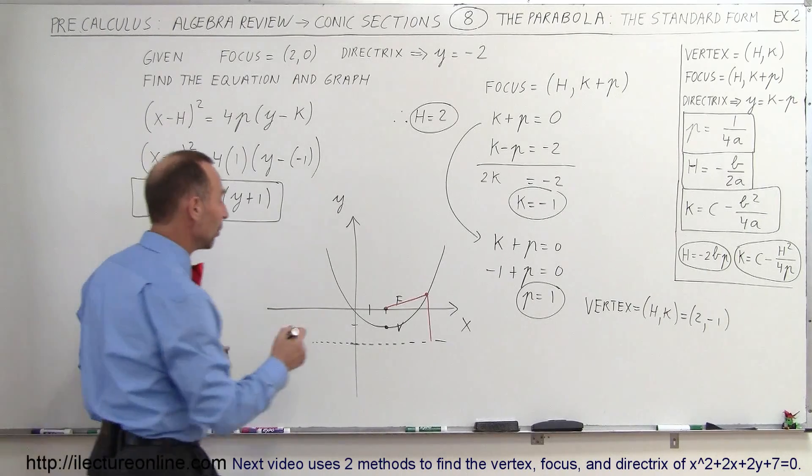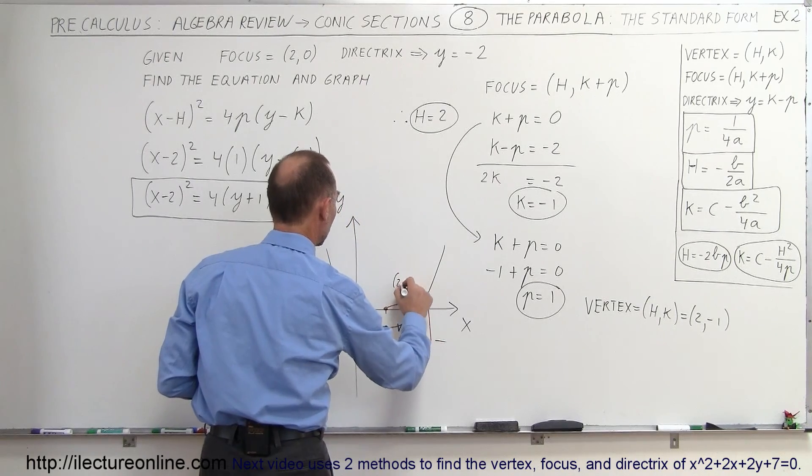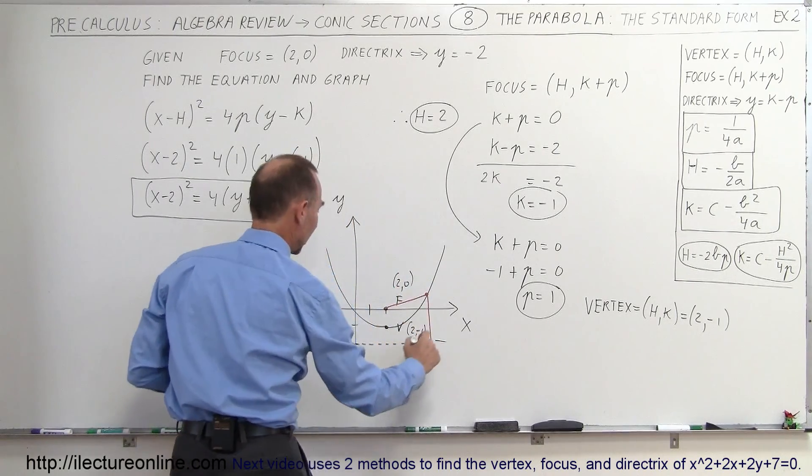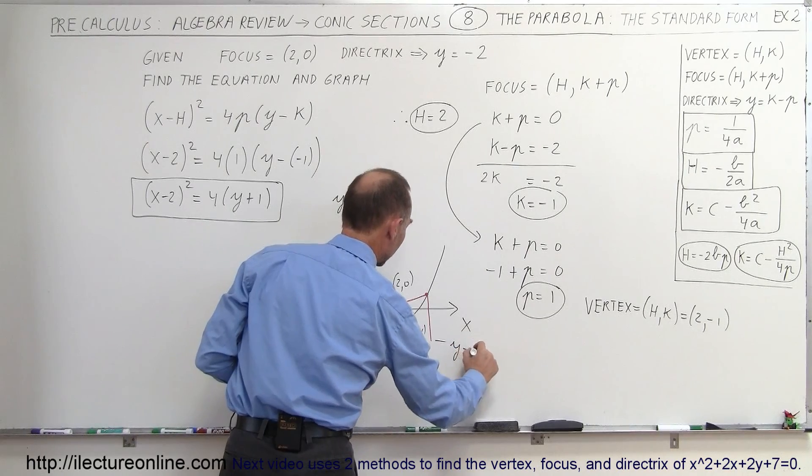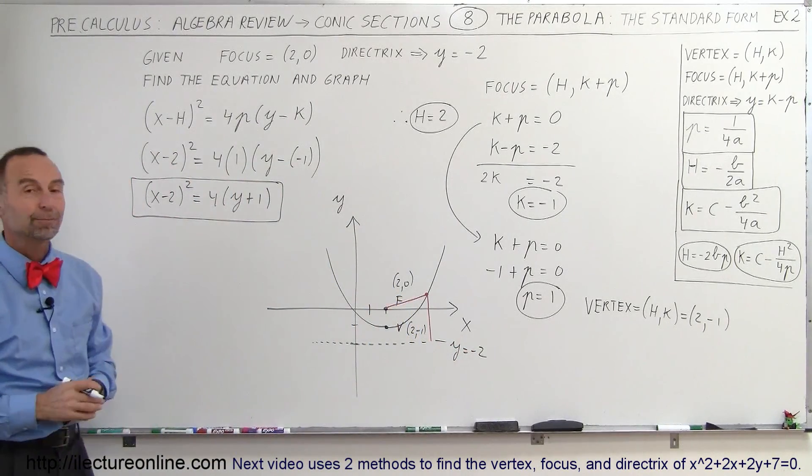Let me label some of the points. So the vertex is at (2, -1). The focus is at (2, 0). And the directrix has the equation y = -2. And there's your parabola and there's the standard form. And that's how we do that.